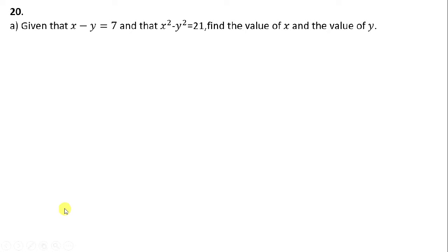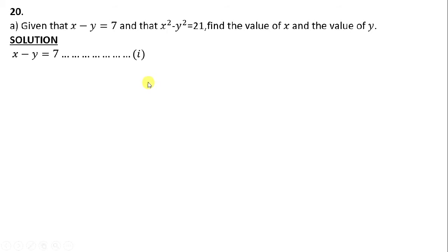Question 20 is saying: given that x minus y equals 7 and that x squared minus y squared equals 21, find the value of x and the value of y. So these are simultaneous equations. The word simultaneous means to occur at the same time. They are saying find the same value of x and the same value of y such that when you replace them into those two equations, it will give you true sentences. Let's use the substitution method.